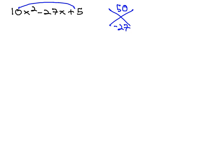50 can be 5 times 10, but that won't give us 27. However, 25 times 2 will, if they're both negative. We'll split the middle term then into negative 25x and negative 2x.